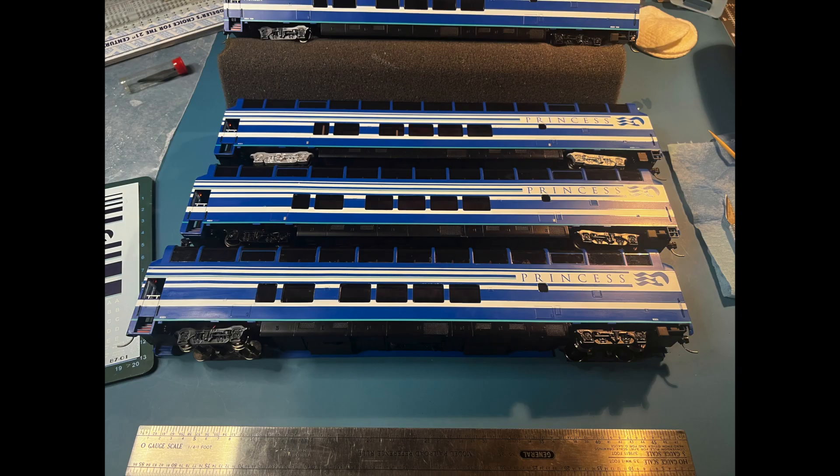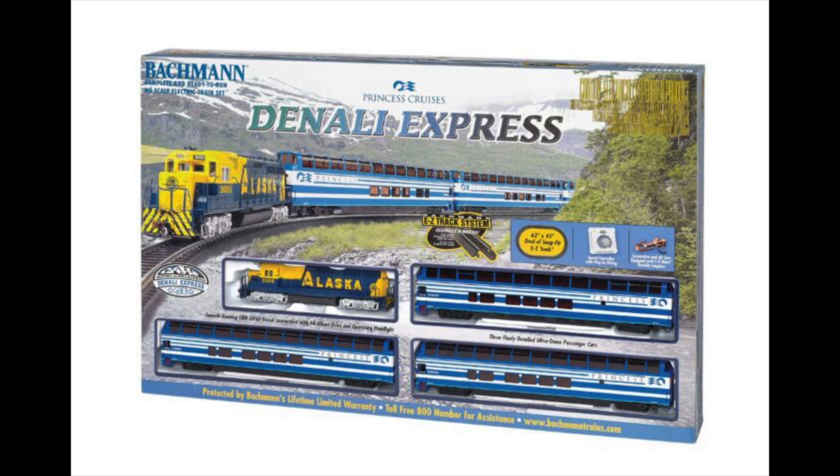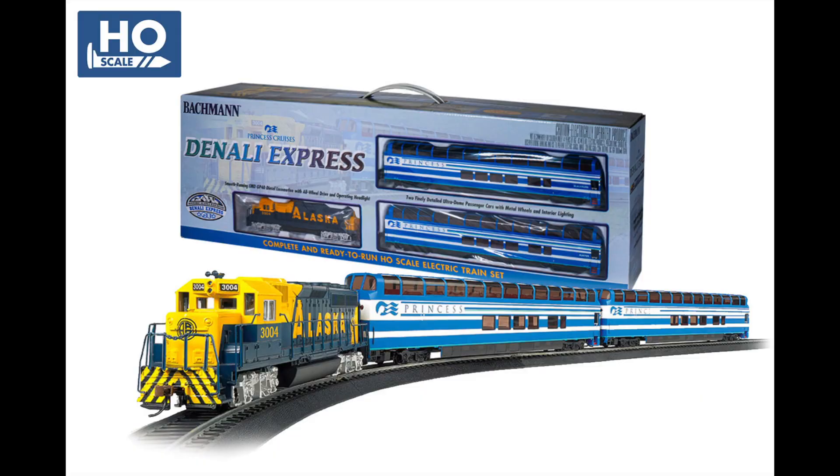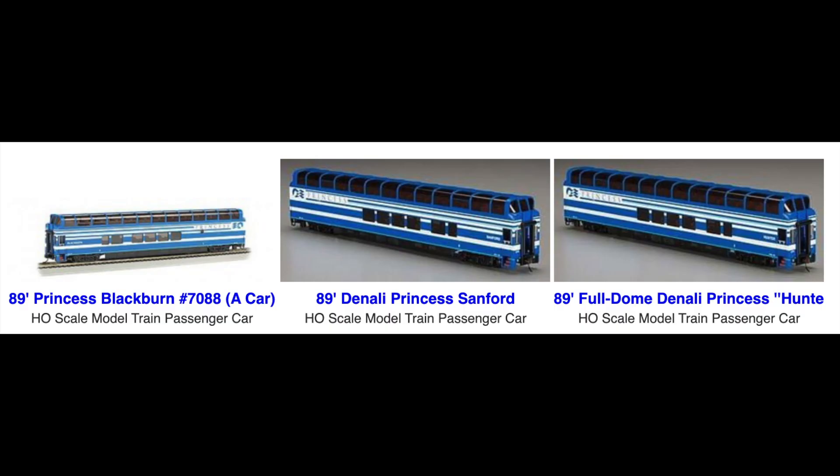Today I will be working on decaling three Princess Cruise Lines Denali Express Colorado rail cars. I had purchased the original Bachman set number 715, which was a three car set, as well as the updated set number 765, a two car set, which you can watch in one of my previous unboxing videos, along with an eBay purchase of one of the original set's cars and three standalone cars from Bachman.